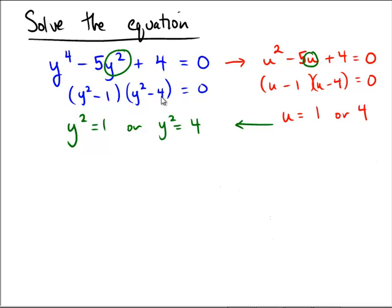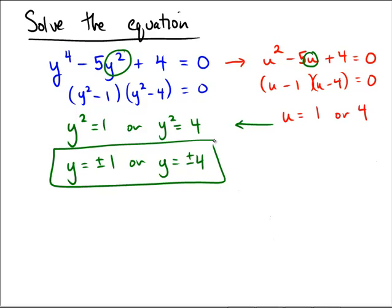You could factor further, but since I'm to this stage, why don't we just say here that y is equal to plus minus 1 or y is equal to plus minus 4. So we're getting all four solutions to this problem as plus minus 1 and plus minus 4.